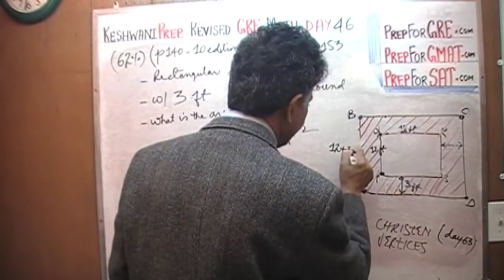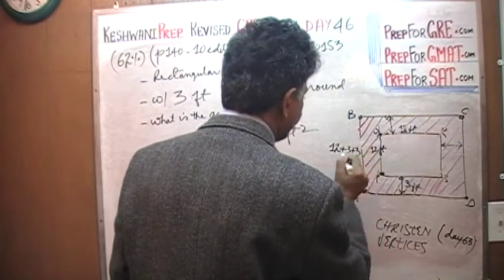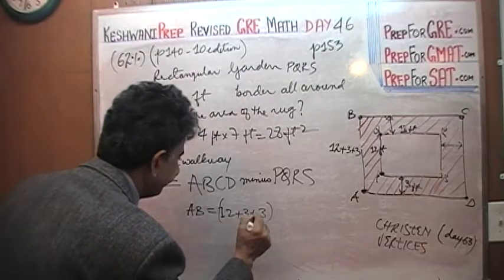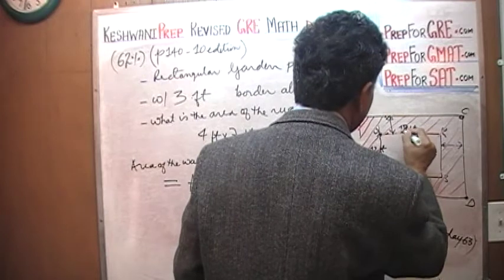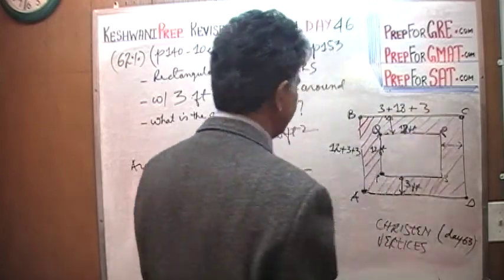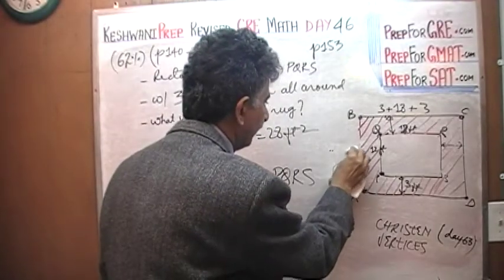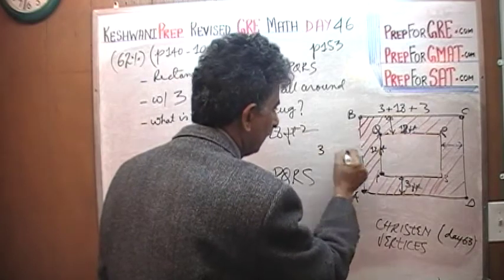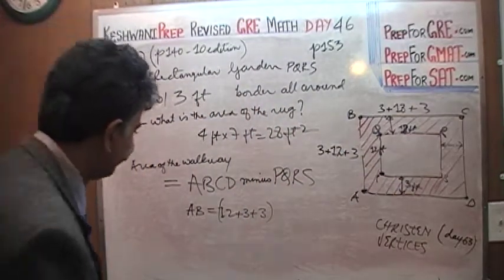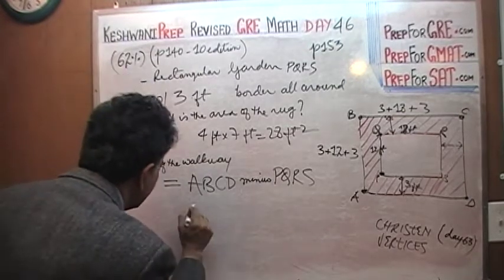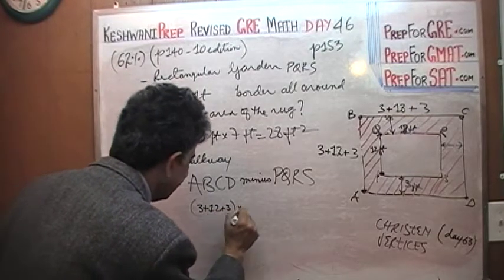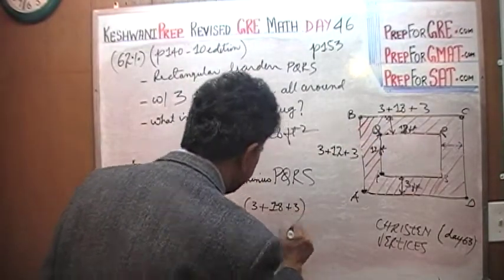Since P to Q is 12 feet, A to B is 12 plus 3 plus 3 = 18. Similarly, B to C: Q to R is 18 feet, so B to C is 18 plus 3 plus 3 = 24. So the outside dimensions are 18 by 24.